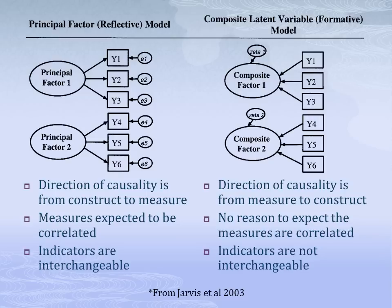There are two different kinds of latent constructs: reflective and formative. For reflective constructs, the direction of causality is from construct to measures, and the group of measures should be correlated and interchangeable, so that if one measure is dropped, the nature of the latent construct does not change. For formative constructs, however, the direction of causality is from the measures to the construct, and the measures don't necessarily correlate nor are they interchangeable, so that if one is dropped, it does change the nature of the latent construct.